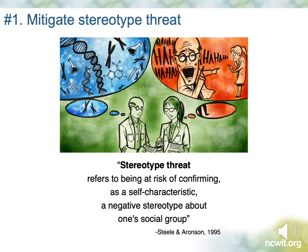Number one is to mitigate stereotype threat. The impact of stereotypes goes beyond just the impacts of the potential bad behavior of people holding them. They can actually affect the performance of individuals who are subject to the stereotype — that's called stereotype threat. The idea that the risk of confirming the stereotype creates anxiety and takes up cognitive resources, leading to poor performance and other negative outcomes.